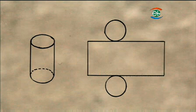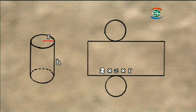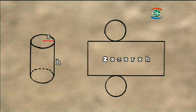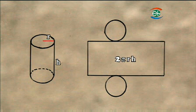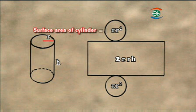The two bases of the cylinder are circles. Let R be the radius of the circle and H be the height of the cylinder. To find the surface area of the cylinder, we can cut the cylinder and lay it flat. The curved surface gives a rectangle whose length equals the circumference of the circular base, that is 2 times pi times R, and whose width equals height H. So the curved surface area equals 2 pi RH. The two base areas equal 2 times pi times R squared. Therefore, the total surface area of the cylinder equals the areas of the two bases plus the curved surface area.